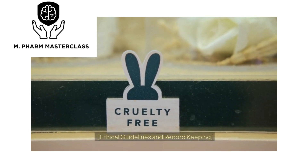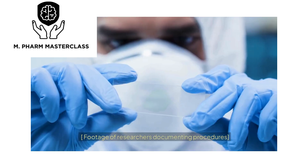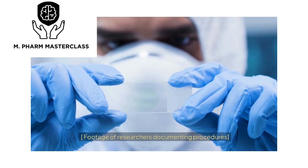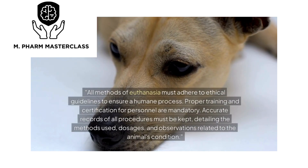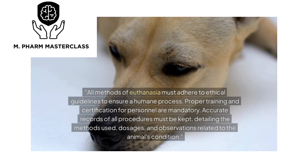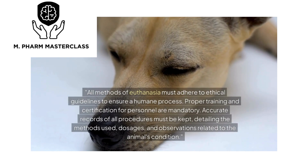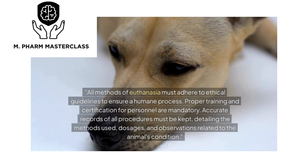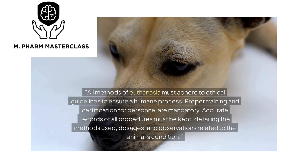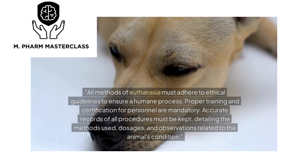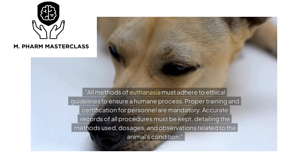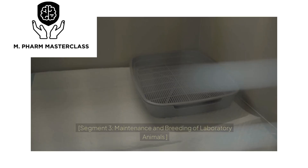All methods of euthanasia must adhere to ethical guidelines to ensure a humane process. Proper training and certification for personnel are mandatory. Accurate records of all procedures must be kept, detailing the methods used, dosages, and observations related to the animal's condition.